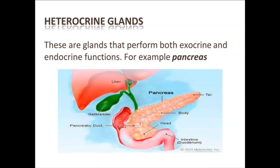Examples of endocrine glands include pituitary glands, pancreas, thyroid glands, and adrenal glands — these are mainly four glands. There are also more glands that we will study further, but in this slide, these four glands are shown.